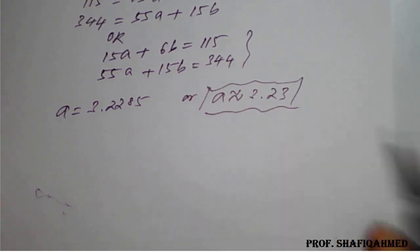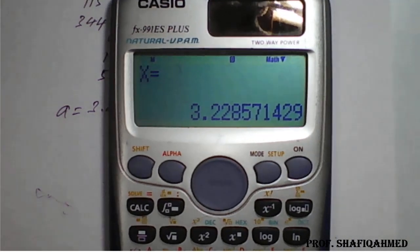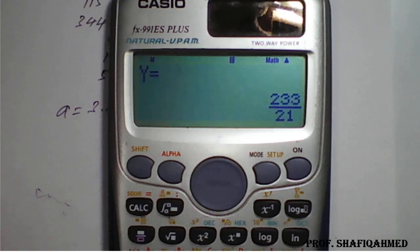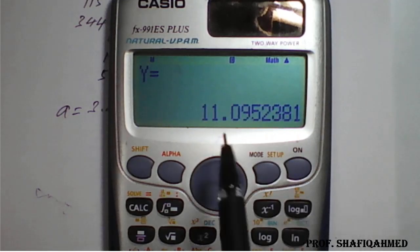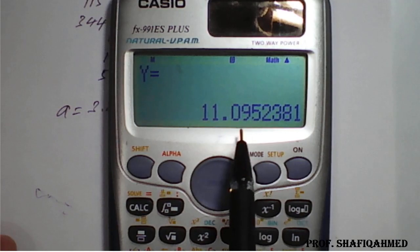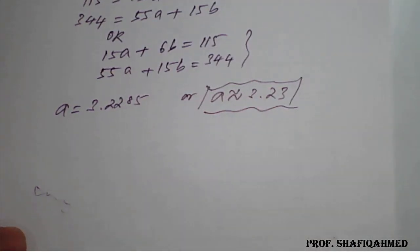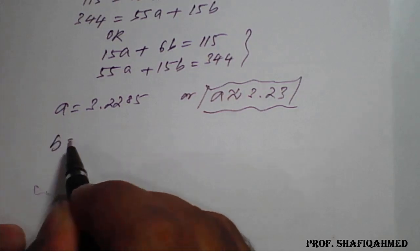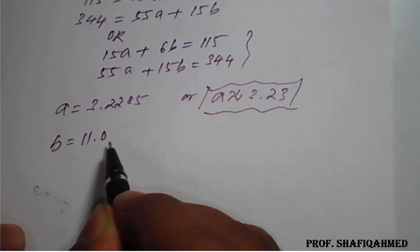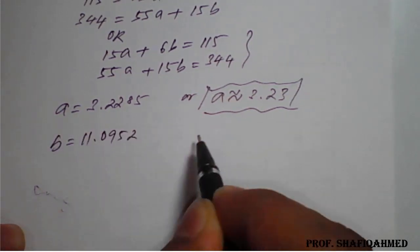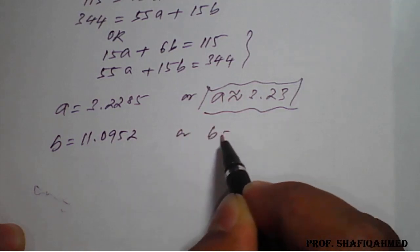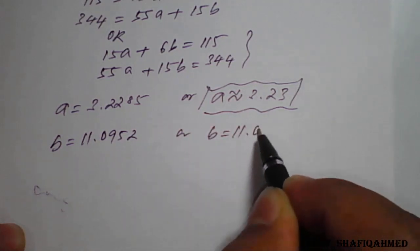Two decimal places we will take. And similarly, if you press one more time the equals sign, we will get the value of b also. So it is 11.095, that is, we will take as b equals 11.095, or I can take as b equals 11.09.